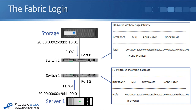Switch 2 will then put all that information into its FLOGI database — that's a mapping between the WWPN and the FCID, and the switch also knows the port that that device is plugged into. The same thing happens when server 1 sends its FLOGI, which goes to switch 1, because that's the switch that it's attached to. Switch 1 will assign the FCID and put the mapping between the port, the FCID, and the WWPN into its FLOGI database. So on each switch, the FLOGI database includes all that information about the directly attached devices.